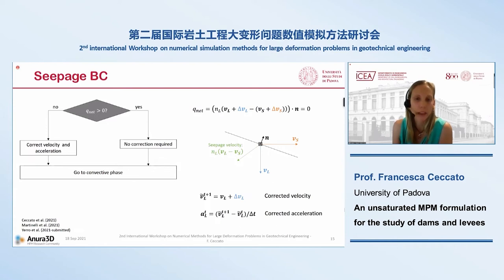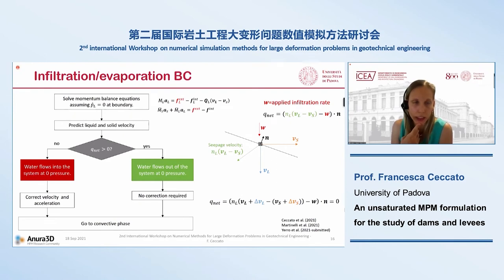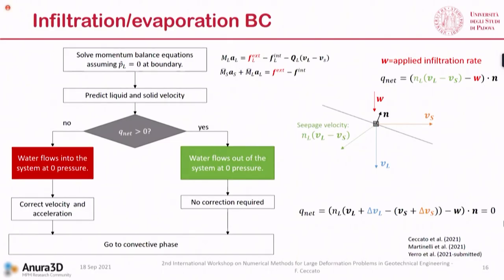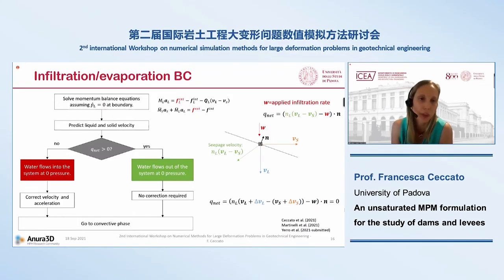The correction is calculated by imposing that the net discharge is zero and that the mixture momentum balance is conserved. We then calculate a corrected velocity and corrected acceleration and move to the convective phase. Regarding the infiltration/evaporation boundary condition, this is viewed as an extension of the seepage face approach. We solve the momentum balance assuming zero pressure at the boundary, predict solid and liquid velocity, and calculate a net discharge that also includes the applied infiltration rate. As before, if the net discharge is positive, no correction is needed; if it is negative, we calculate corrected liquid and solid velocities.